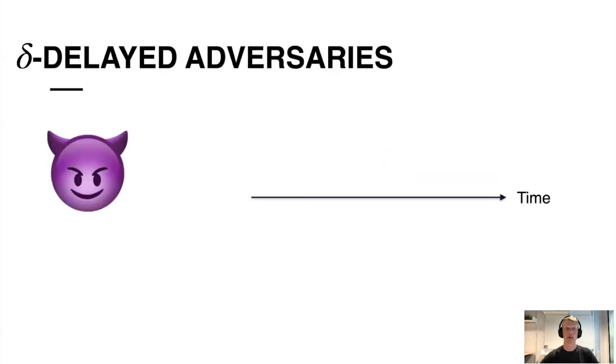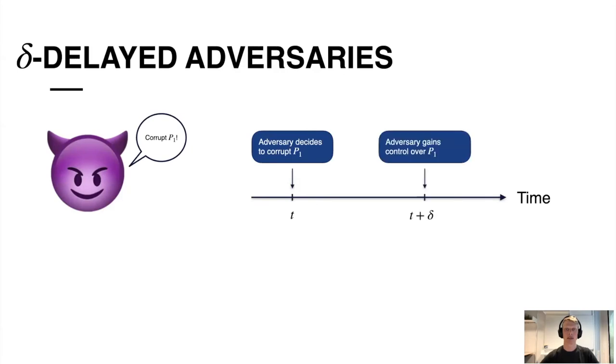In this work, we consider a delta-delayed adversary, where once the adversary decides to corrupt a party, it takes a certain time until the corruption actually becomes effective.